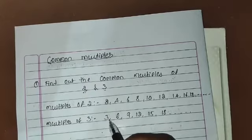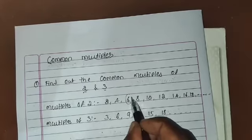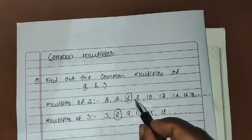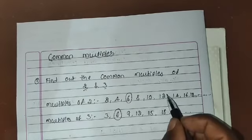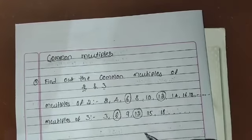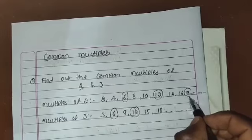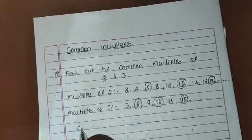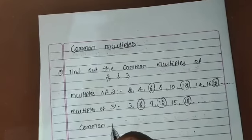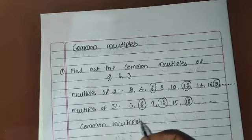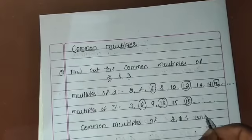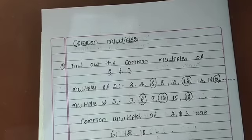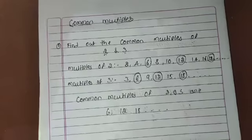Checking: 2 is not in multiples of 3; 4 is not; 6 is in multiples of 2 and also in multiples of 3; 8 and 10 are not; 12 is in both; 18 is in both. So the common multiples of 2 and 3 are 6, 12, 18, and so on.